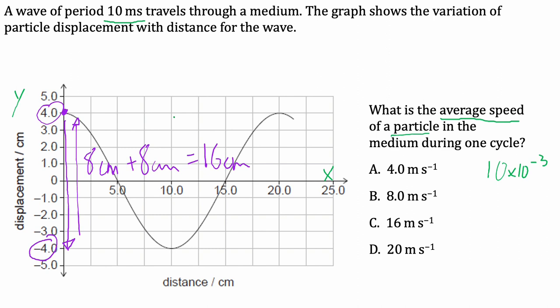The x-axis you can pretty much ignore, it's just telling you that the length of one wave from one side to the other is 20 centimetres really. But here they're asking you about the particle on the wave.